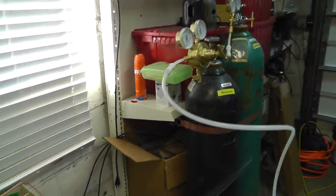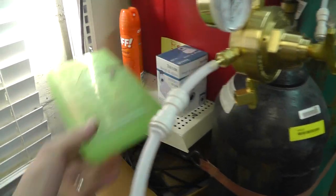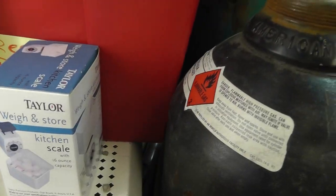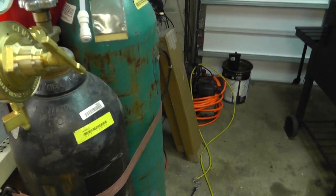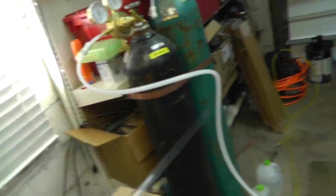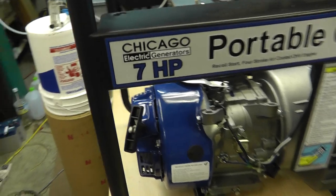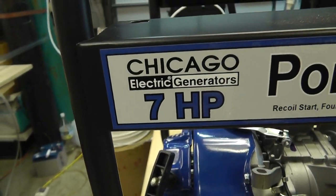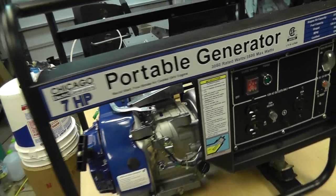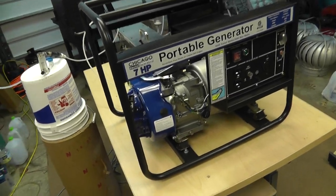Basically what I have here is a bottle of hydrogen, thanks to Rod, as I've mentioned in the past multiple times. He has also purchased the generator that I'm playing with, and it's basically a 7 horsepower Chicago Electric that is from Harbor Freight.